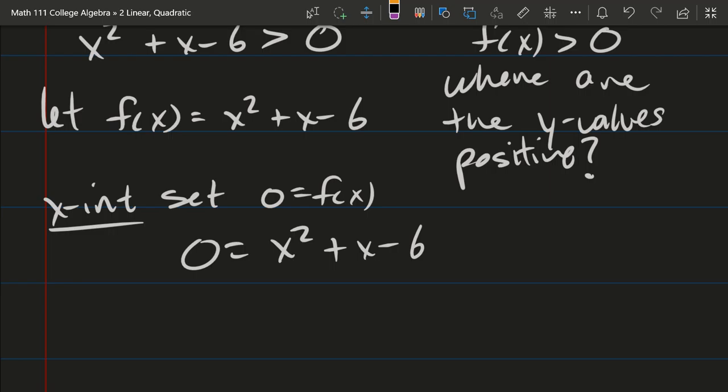So graphing this, all we need are really the x-intercepts. We're going to set it equal to 0. So 0 equals f(x), then we got 0 equals x squared plus x minus 6.